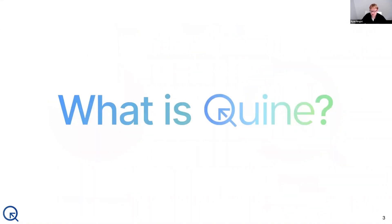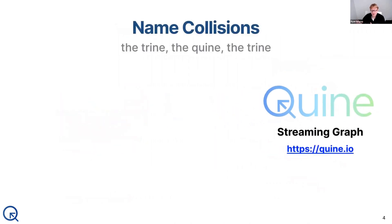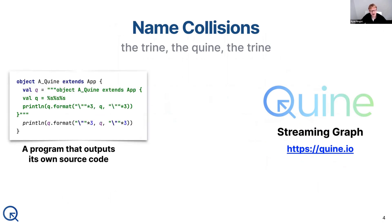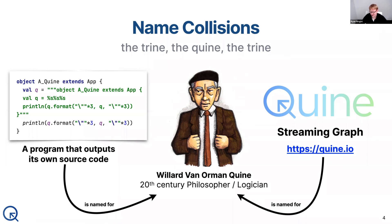So let's start with this question: what is Quine? For us and our purposes, Quine is a streaming graph. In computer science, a Quine might also refer to a program that outputs its own source code. The name Quine actually comes from a 20th century philosopher — a logician who did a lot of very foundational work that led to the modern era of computers, working in deep logic and applying the logic we use to interpret data. He was kind of a forerunner to a lot of the modern work that happens now.